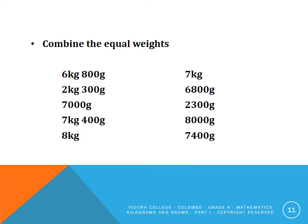Now you have to match the equal weights. Look at the amounts given on the left side: six kilograms and eight hundred grams; two kilograms and three hundred grams; seven thousand grams; seven kilograms and four hundred grams; and eight kilograms. Now look at the amounts on the right side and find the equal weights to combine them.